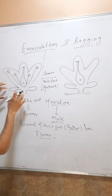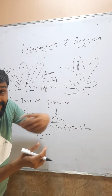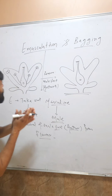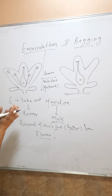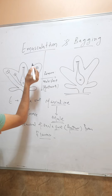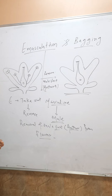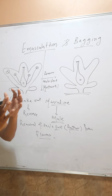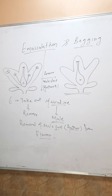So here from that flower I have removed all the male parts. Why is it done? It is done to prevent self-pollination, because if we do not remove them, pollen from these will fertilize the female part. So to prevent self-pollination, the male parts of a flower are removed.